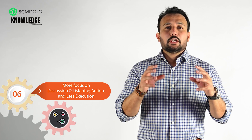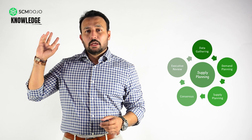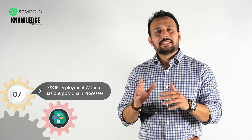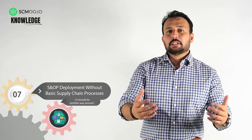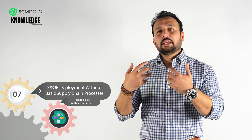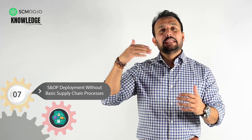One challenge I've seen is there's more focus on discussion and listing actions rather than execution. If you're not going to drive decisions and execute them, people will lose momentum and trust, and nobody will turn up to your S&OP meeting. Move away from too much discussion and listing actions with very little execution — shift toward less discussion, more action listing, and more execution. Also, you cannot start deploying S&OP without basic supply chain processes in place: your ABC analysis, make-to-stock and make-to-order policies, on-time performance measurement, and key KPIs.